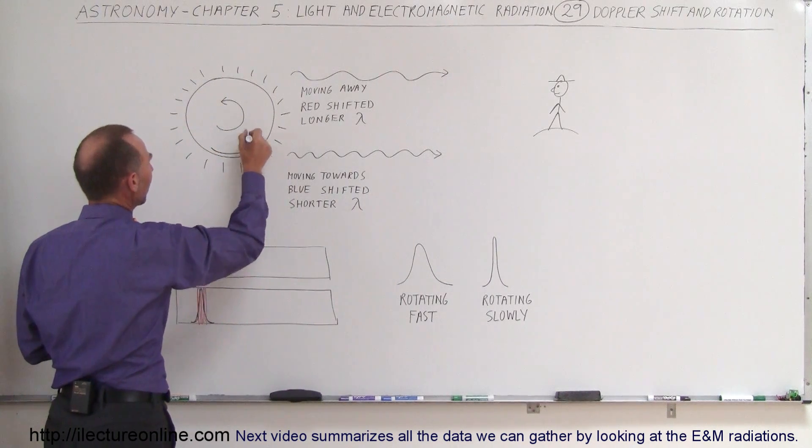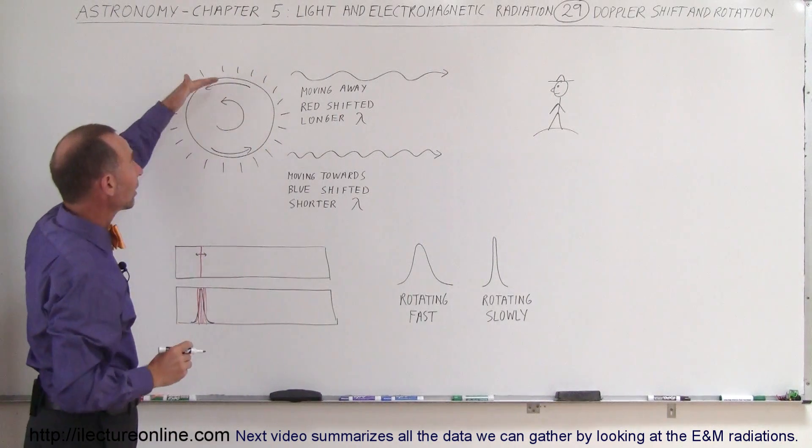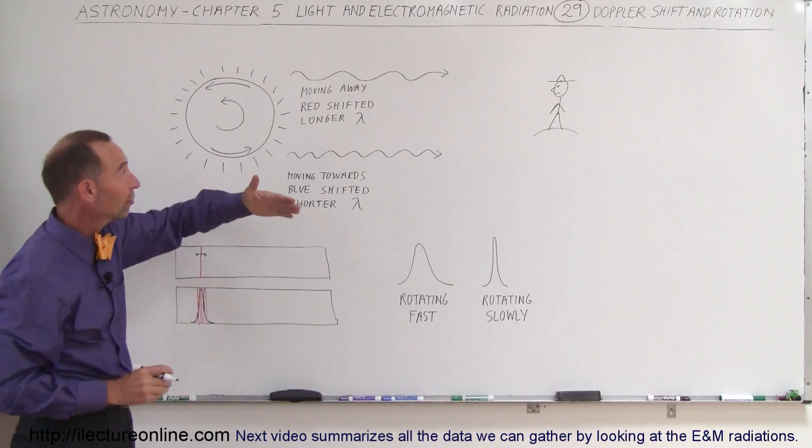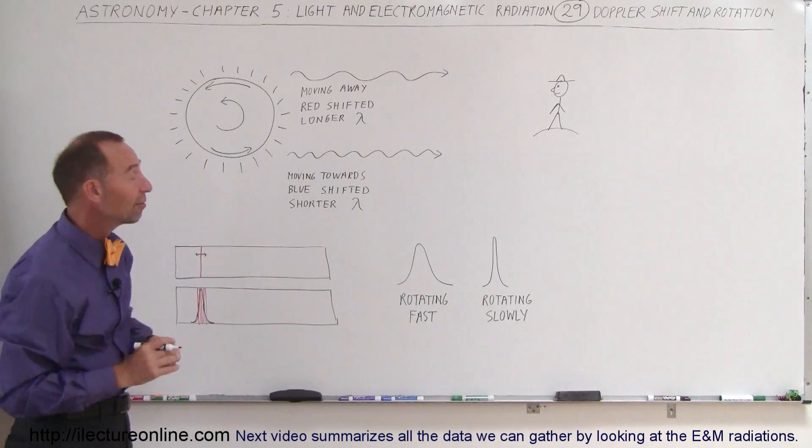So this part of the star is moving this way. This part of the star is moving that way. When light emanates from that part of the star, it appears to be coming from an object that's moving away from us. So we say the object appears to be moving away. It is therefore red-shifted. It has a longer wavelength.